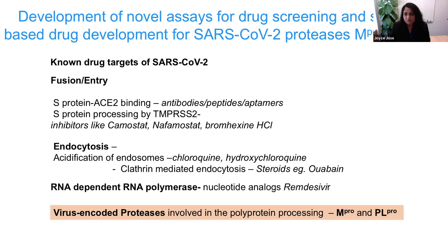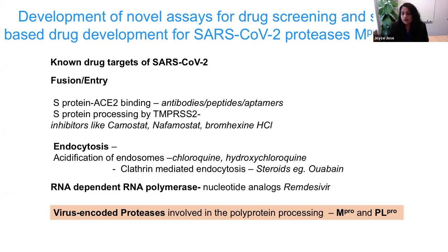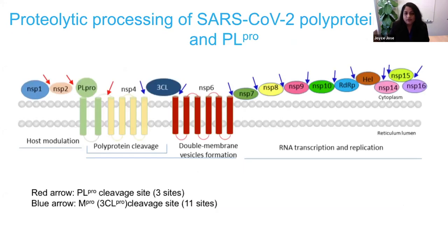There are different drug development strategies. We can prevent ACE2 binding using antibodies, peptides, or aptamers. We can inhibit protein processing by TMPRSS2 at the plasma membrane, inhibit endocytosis, or prevent viral fusion. Another major strategy is to inhibit RNA-dependent RNA polymerase using nucleotide analogs such as remdesivir. But in this talk, we are focusing on the virus-encoded proteases: MPRO (main protease, also known as NSP5) and PLPRO (papain-like protease, NSP3).